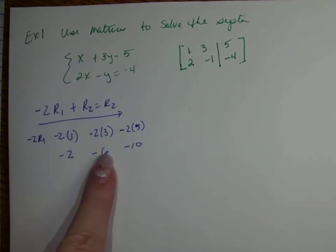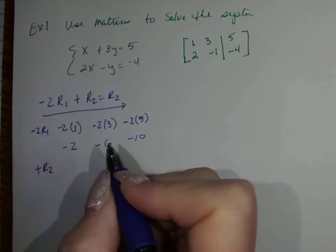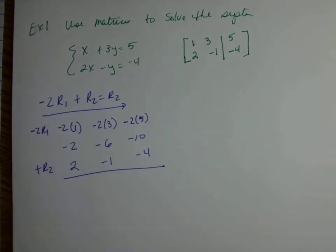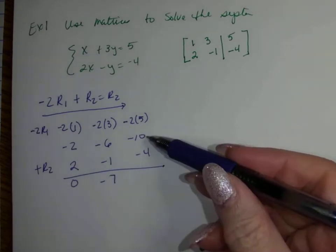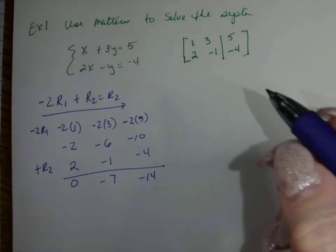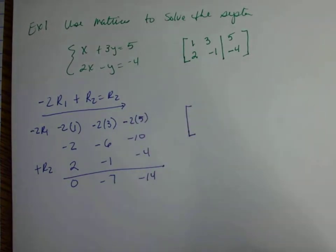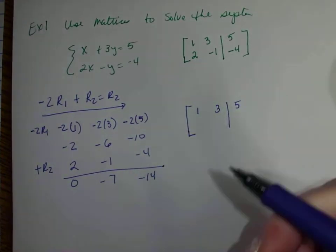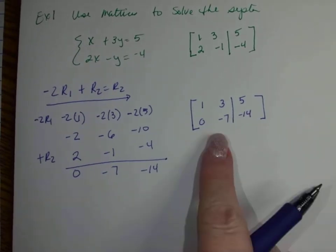Now I add row 2, which is 2, negative 1, and negative 4. Negative 2 plus 2 gives me 0. Negative 6 minus 1 gives me negative 7. And negative 10 minus 4 gives me negative 14. Row 1 is unchanged at 1, 3, and 5. Row 2 is now 0, negative 7, and negative 14 — we got our zero.